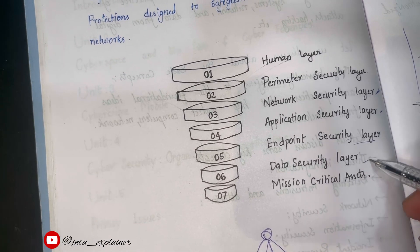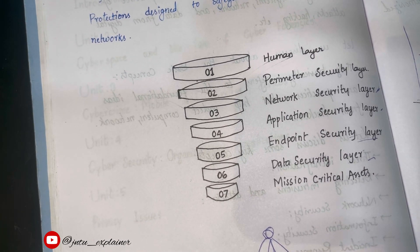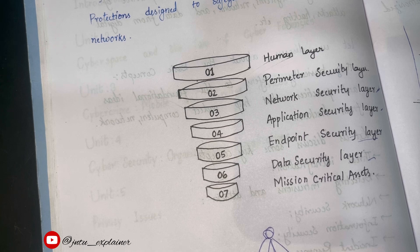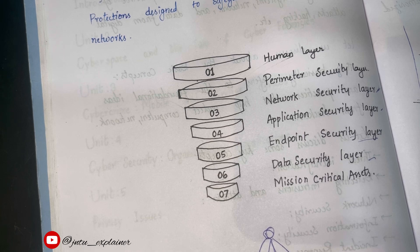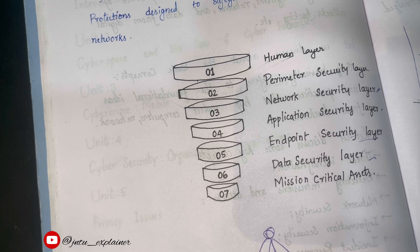Coming to the fifth one, data security layer. Data security layer is dedicated to protecting the data residing in the network, focusing on maintaining its confidentiality.